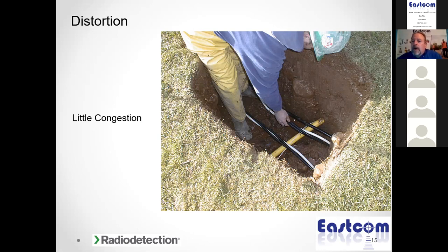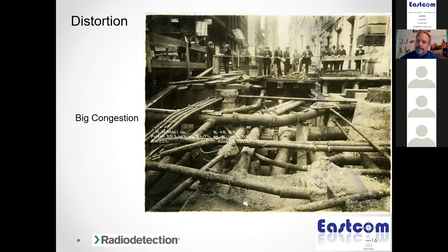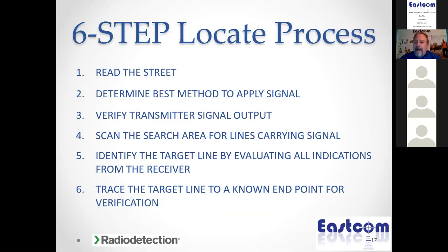Distortion is created by multiple utilities in the ground, and by other metals — your pipe or cable coming near a guard rail, chain link fence, culvert pipe, manhole cover, valve casing, or even a 55-gallon drum buried in a farmer's field 50 years ago. As your magnetic field gets near that metal, it gets pulled or drawn toward it — that's distortion. A lot of us are dealing with heavy congestion in our cities and towns, and all that metallic infrastructure creates distortion.